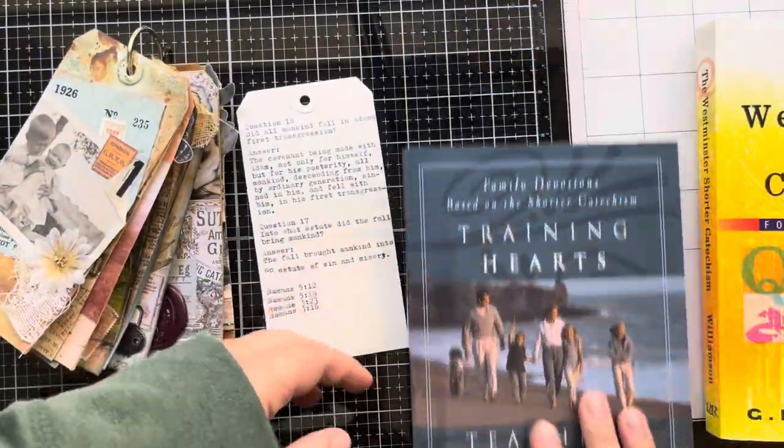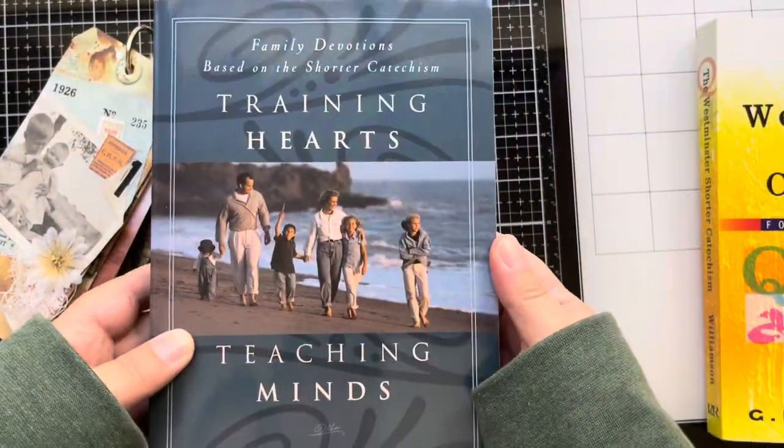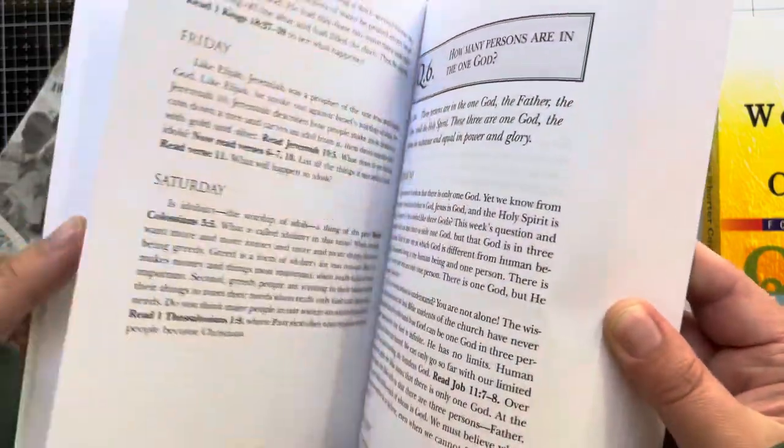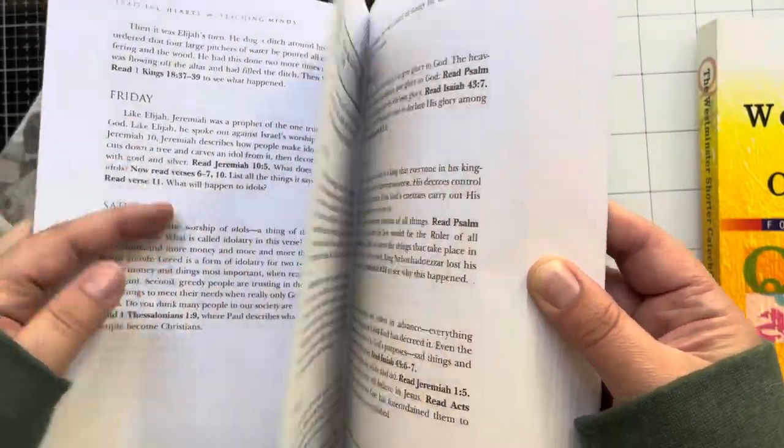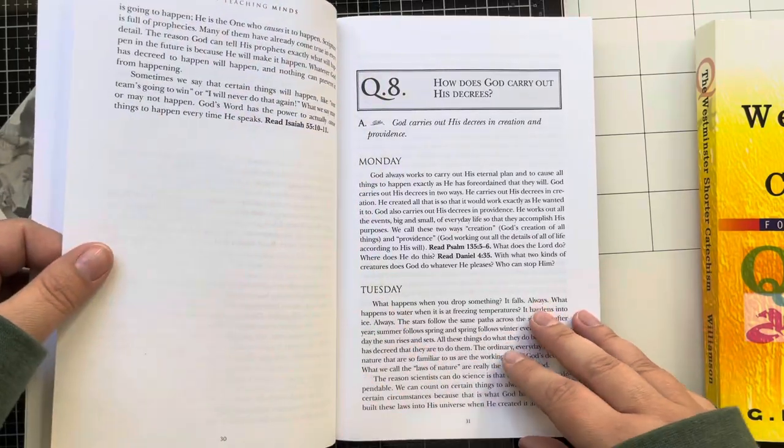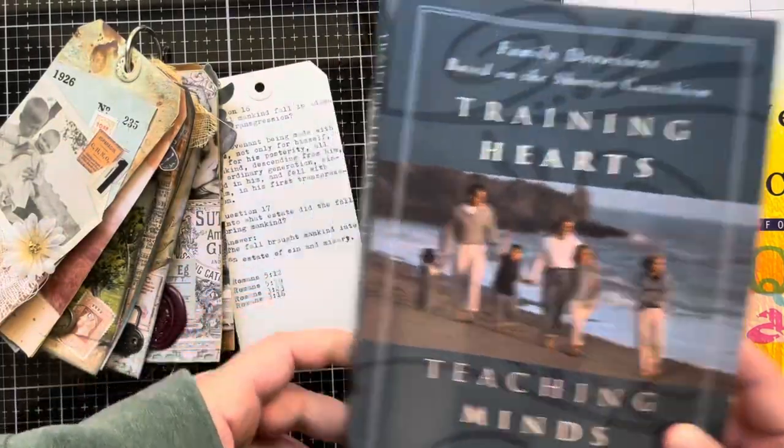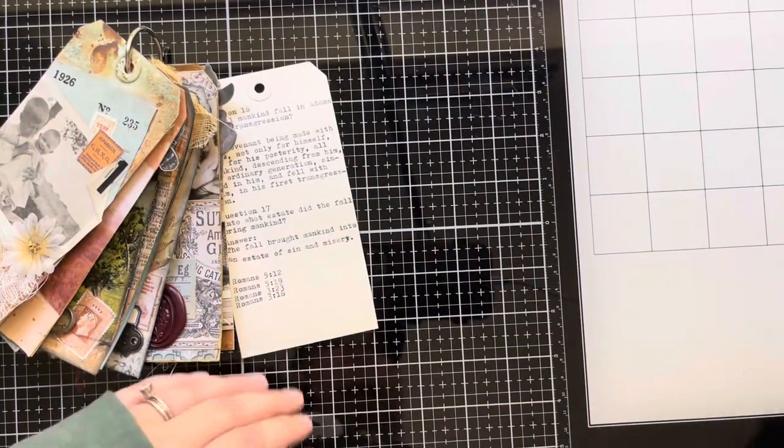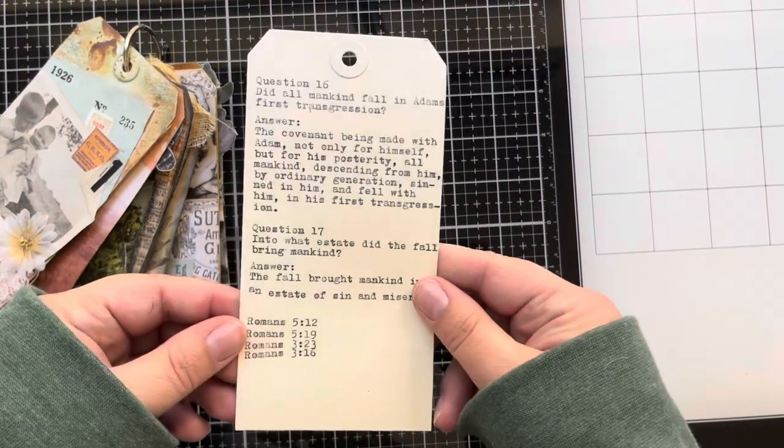These are the two main books I read: The Westminster Shorter Catechism for Study Classes by G.I. Williamson, and then this one is Training Hearts, Teaching Minds by Starr Meade, and it's more geared towards children. It's like a short devotional each day as they go over the Westminster Shorter Catechism.